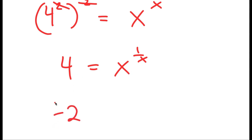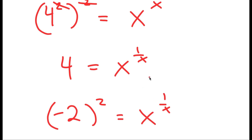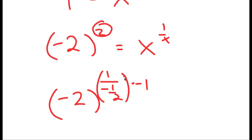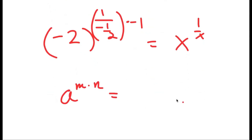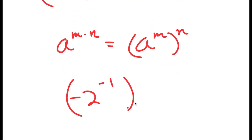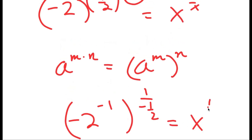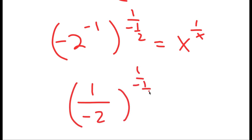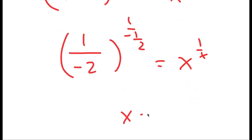Now, four is also the same thing as negative two squared. The exponent two can be rewritten as one over negative one half times negative one. Using the property that A to the M times N equals A to the M to the N, I move the negative one to be an exponent of negative two. So I get negative two to the power of negative one to the power of one over negative one half, which equals X to the power of one over X. And negative two to the power of negative one is one over negative two, which is negative one half. So another solution here is X equals negative one half.